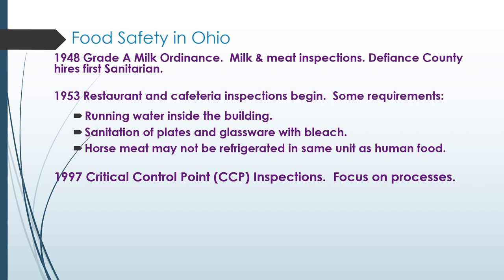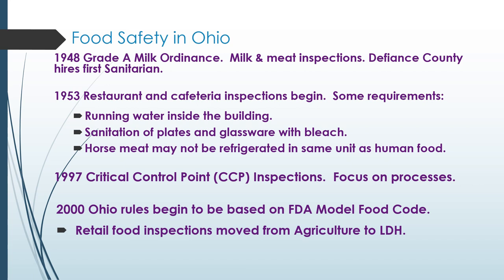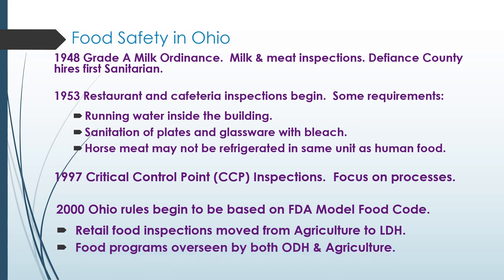In 1997, critical control point inspections began, with a focus on the processes for handling food and measuring temperature during each step to ensure there is no window where bacteria can be introduced or undergo rapid growth. In 2000, Ohio rules began to be based on the FDA model food code, and retail food inspections were moved from agriculture to the local health district, with food programs now overseen by both the Ohio Department of Health and the Department of Agriculture.